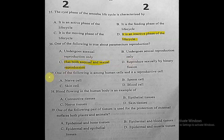Section two, question seven: one of the following is a human cell and it is a reproductive cell. The choices are nerve cell, skin cell, sperm cell, and blood cell. Since the question asks for a reproductive cell, the correct answer is the sperm cell.